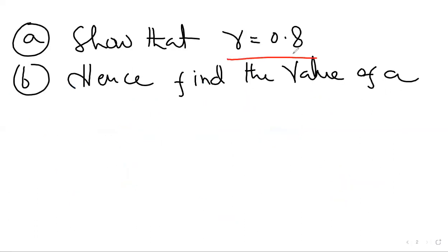The target is we need to show that the R value is 0.8, and hence when the value of R is found, we need to find the first term, which is A.